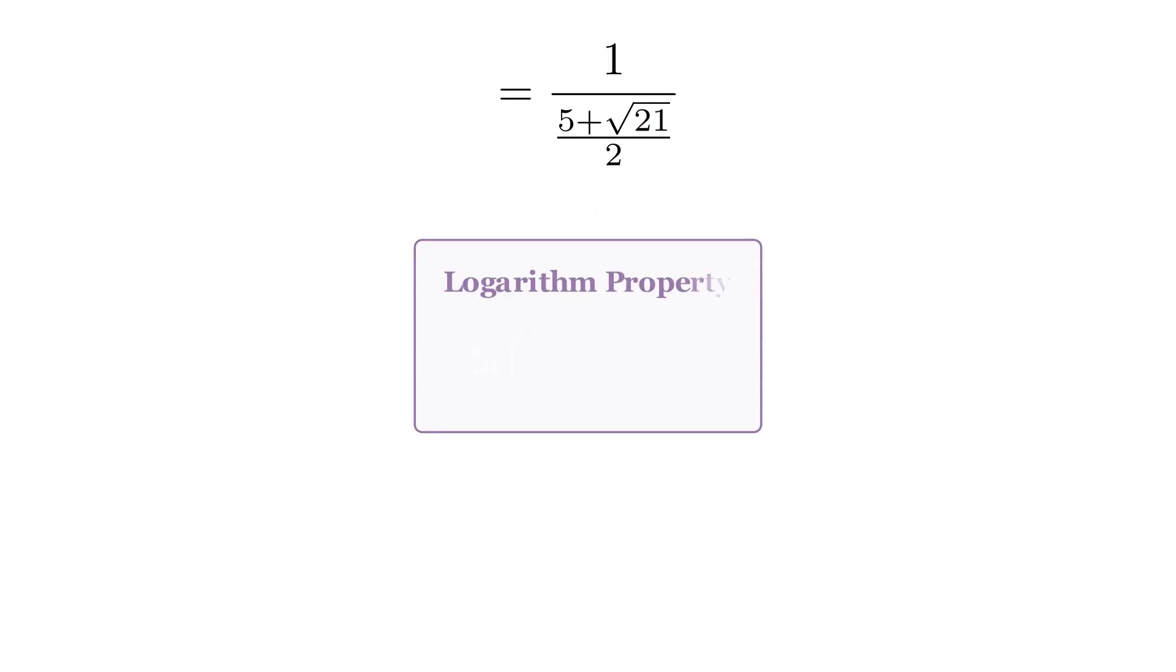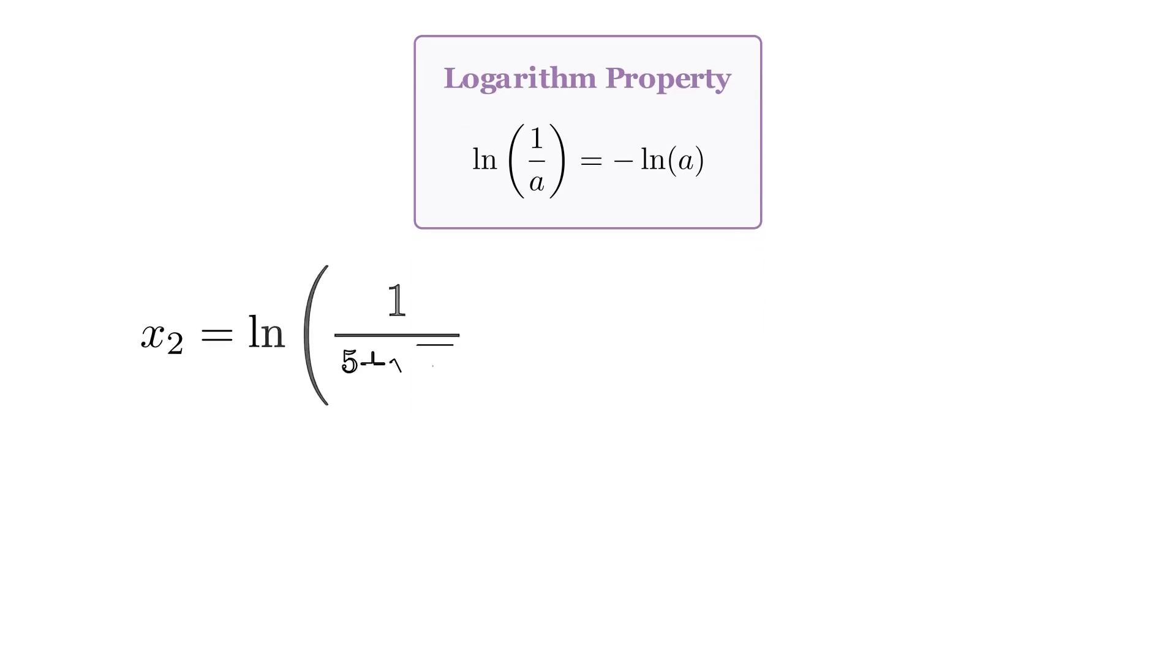And this connects to a beautiful property of logarithms. The log of one over something equals the negative of the log of that something. So our second solution for x is simply the negative of our first solution. This beautiful symmetry isn't just a coincidence. It's telling us something deep about the structure of the original equation.